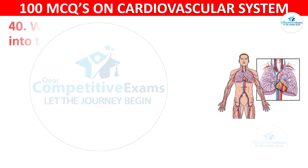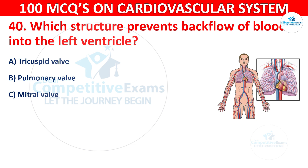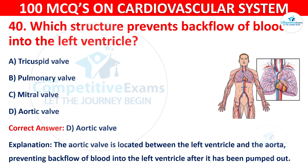Question 40: Which structure prevents backflow of blood into the left ventricle? Options are: Tricuspid valve, Pulmonary valve, Mitral valve, or Aortic valve. The correct answer is D, Aortic valve. The aortic valve is located between the left ventricle and the aorta, preventing backflow of blood into the left ventricle after it has been pumped out.